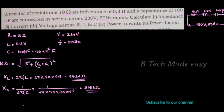When we do a series circuit, we can write the impedance formula with XL plus XC the whole square. The inductive reactance XL is taken as positive and the capacitive reactance XC is taken as negative, so we write Z as root of R square plus XL minus XC the whole square.